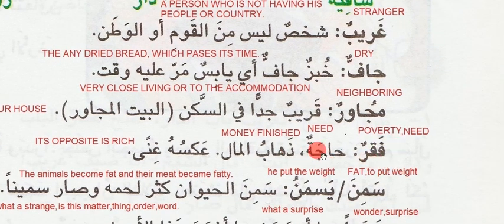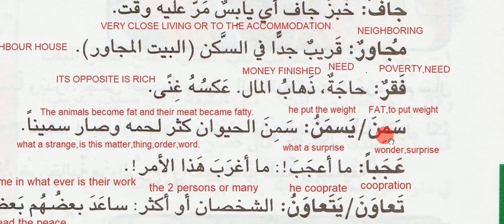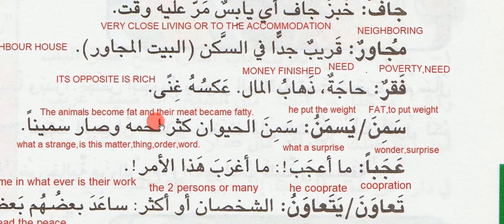Fakr means poverty or need. Haja means need. Zahab al-mal — money finished. Zahab means gone, so money is finished. Its opposite, aqsa, is ghani, meaning rich. Samina means fat, to put on weight. Yisman — he put on weight. Samina al-haywan — qasr al-lahma wa sari al-saminan. The animals became fat and their meat became fatty. Okay.